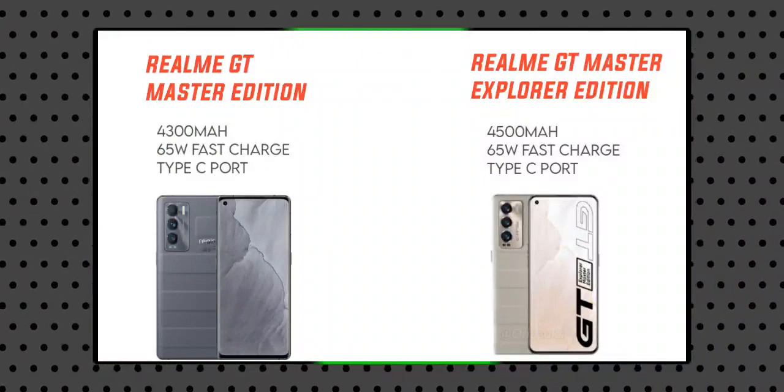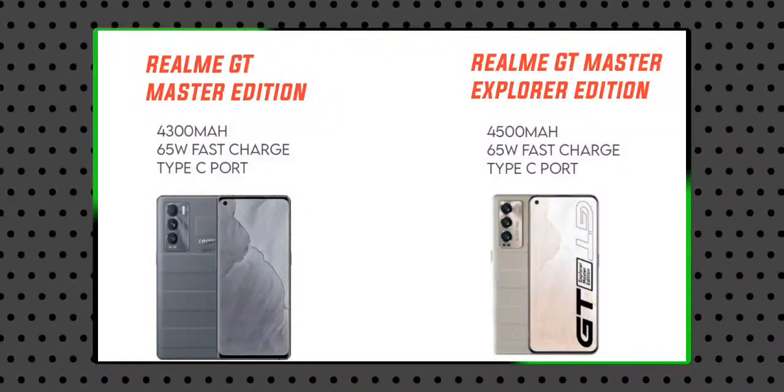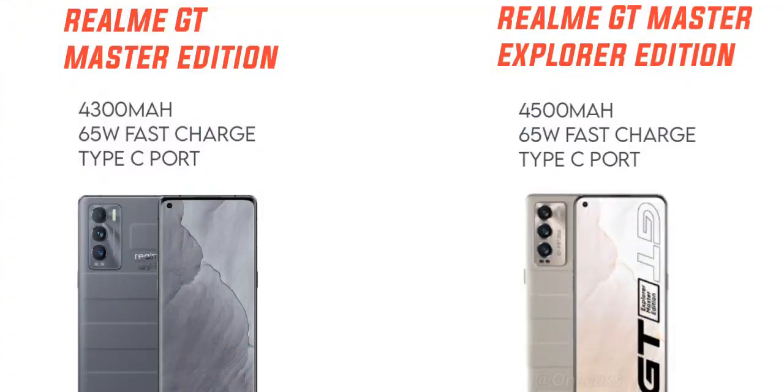Regarding battery: the Realme GT Master Edition has a 4300mAh battery with 65W fast charging support, while the Realme GT Master Explorer Edition has a 4400mAh battery, also with 65W charging. There is only a 100mAh difference between the two, so both will give you the same battery backup. Both can achieve a full charge in around 45 minutes.